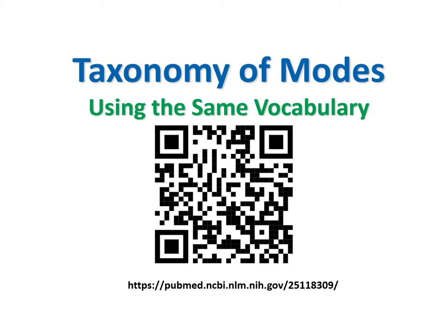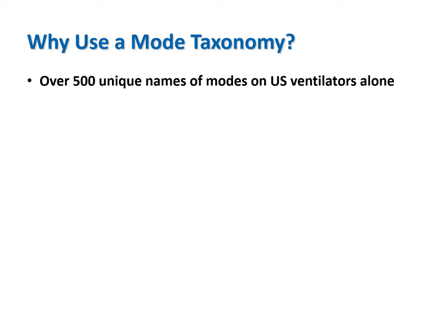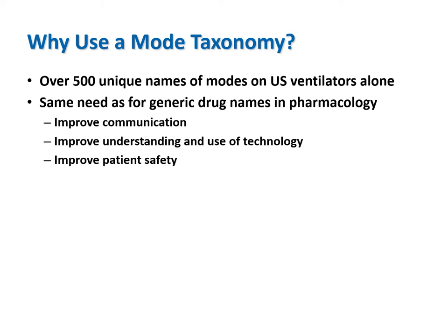That is enough theory to start the topic of mode taxonomy or classification system. The need for a taxonomy has evolved rapidly with the increase in ventilator technology complexity. There are now over 500 different brand names for modes created by ventilator manufacturers, yet there are only a few dozen modes that are actually unique, and many of these modes are not mentioned in operator manuals. We need a taxonomy to create generic mode classifications for the same reasons we need generic drug names—to improve communication amongst clinicians, educators, researchers, and manufacturers.